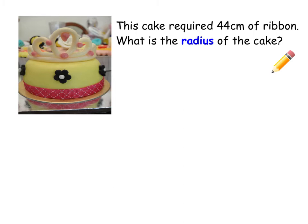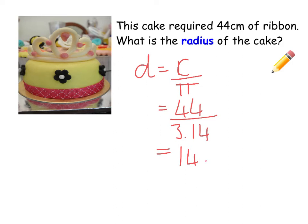Now, circumference will allow us to get the diameter. But obviously, if you know the diameter, you then know the radius easily. So our diameter is circumference over π, which is 44 over 3.14, which gives us a very not nice answer this time. It gives us 14.0127. So I'm going to go with 14.01. So your diameter is 14.01.